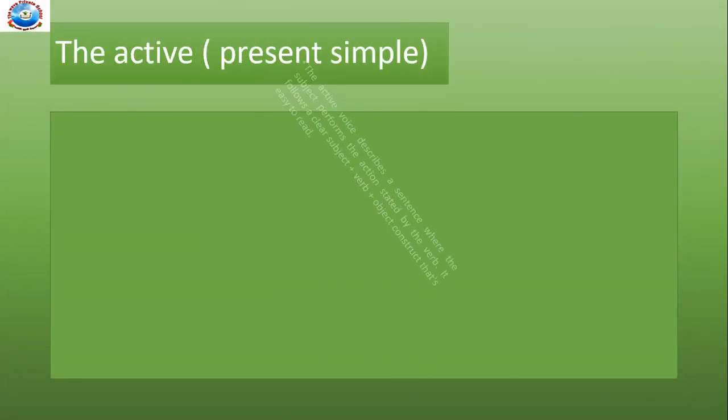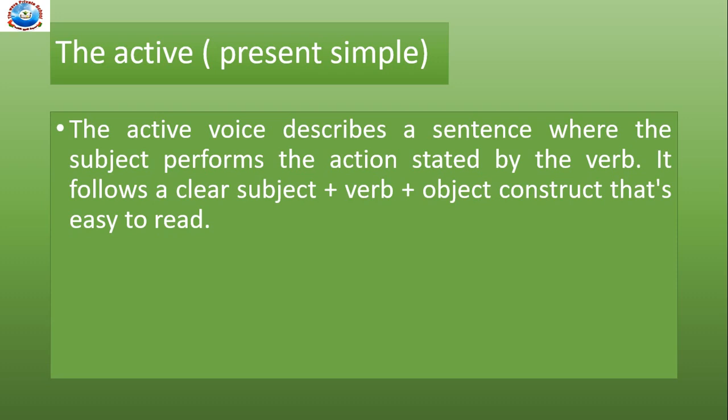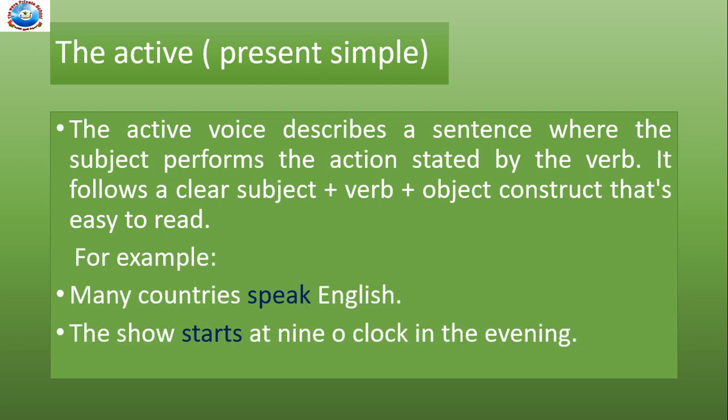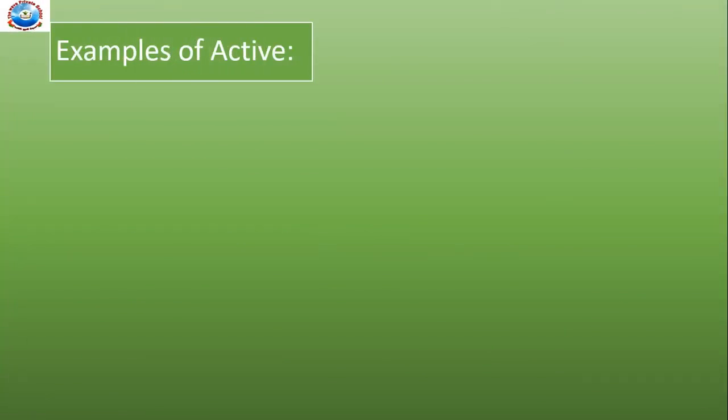Now let's learn the active voice with present simple. The active voice describes a sentence where the subject performs the action stated by the verb. It follows a clear subject plus verb plus object construct that's easy to read. For example, many countries speak English. The show starts at 9 o'clock in the evening. To make this topic more clear, let us see some examples of active.